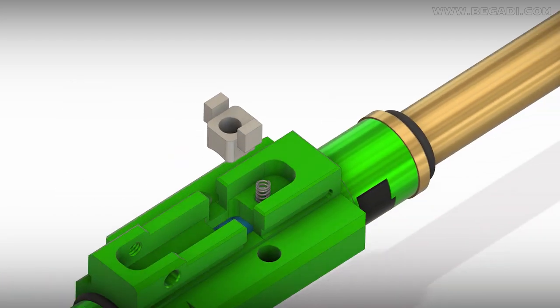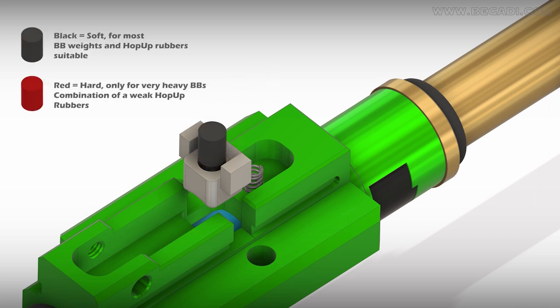Now insert one of the included rubbers into the hole. Two rubber compounds are provided. The black variant is soft, while the red one is slightly harder and produces a stronger hop-up effect.